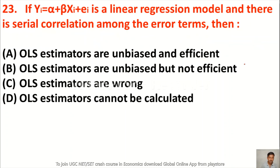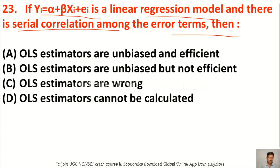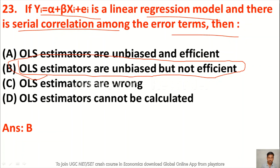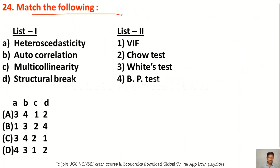Question 23: Yi = α + βXi + εi is a linear regression model with serial correlation among the error terms. Then — option A OLS estimators are unbiased and efficient, option B OLS estimators are unbiased but not efficient, option C OLS estimators are wrong, option D OLS estimators cannot be calculated. The right answer is option B — OLS estimators are unbiased but not efficient. Question 24 (Match the following): Heteroscedasticity — White's test; Autocorrelation — BP test; Multicollinearity — VIF; Structural Break — Chow test. The right answer is option A.